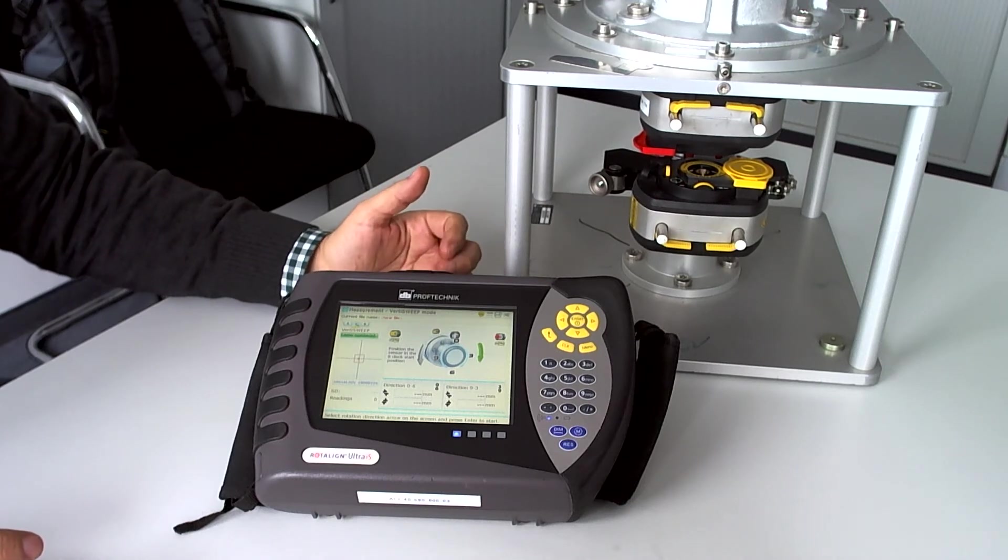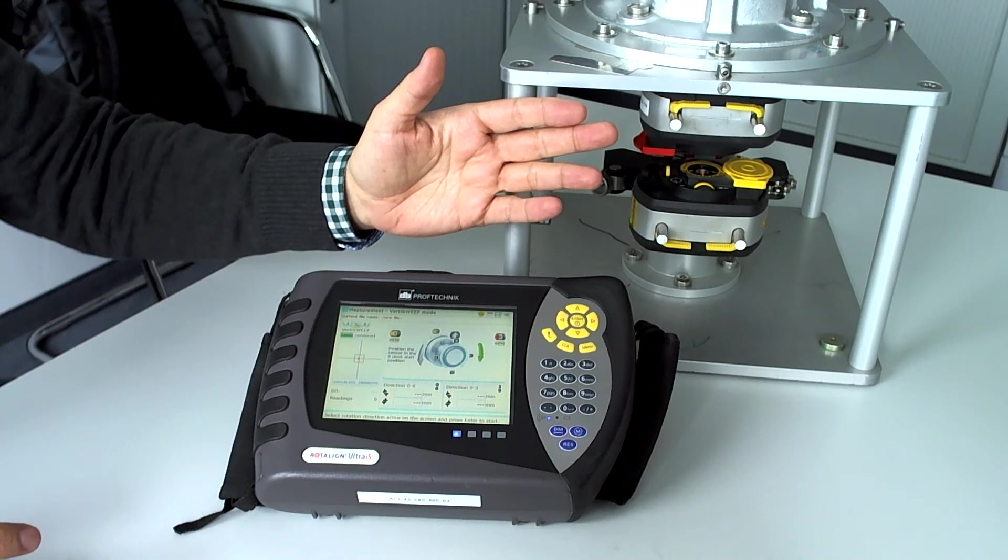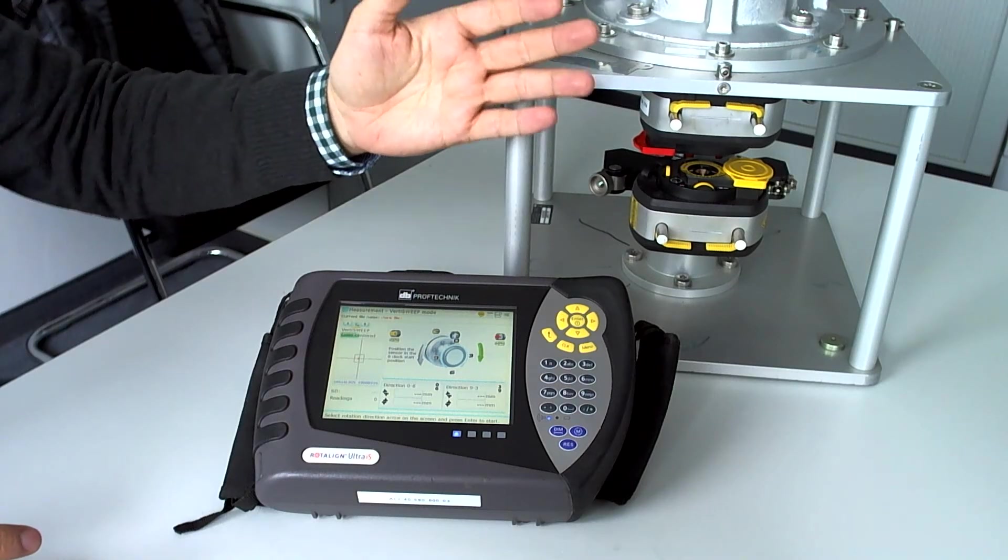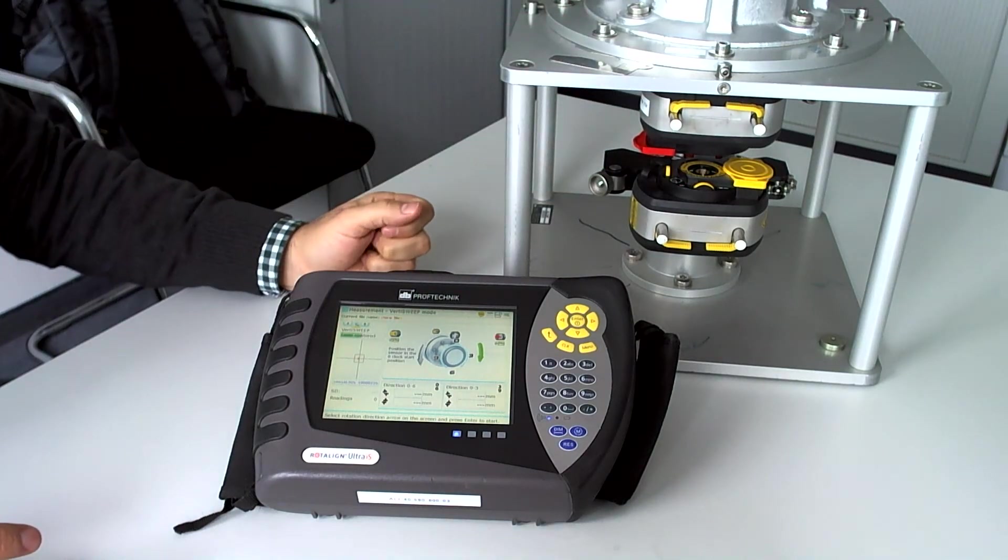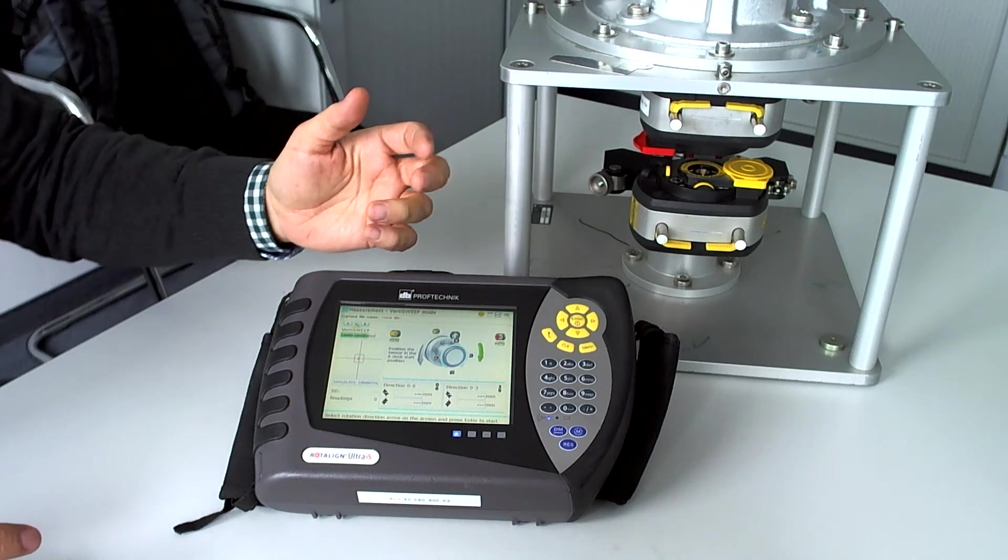With the VertiSweep, this problem is no longer existing because all what is needed is that the user defines the initial position, rotates the shaft 360 degrees and stops the measurement. 360 degrees or a little bit more for convenience.